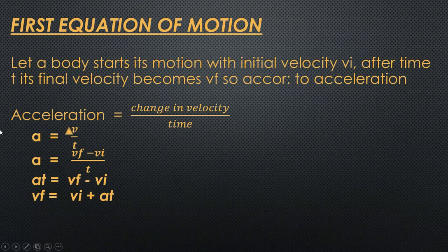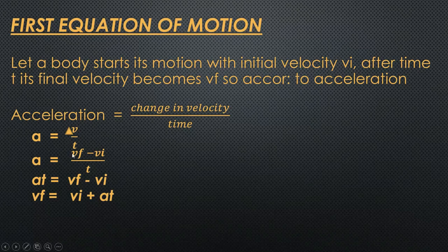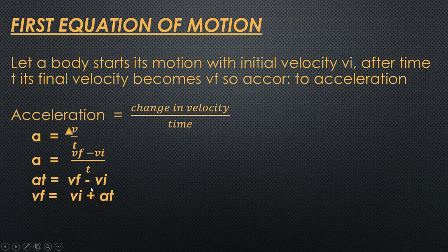As you can see, the formula for acceleration is change in velocity per unit time. For change in velocity, we use delta, which indicates change in velocity. In place of delta, we put the value v_f minus v_i. So our acceleration formula becomes a = (v_f - v_i)/t. Rearranging, a·t = v_f - v_i. Bringing v_i to the other side, our first equation becomes: v_f = v_i + a·t.